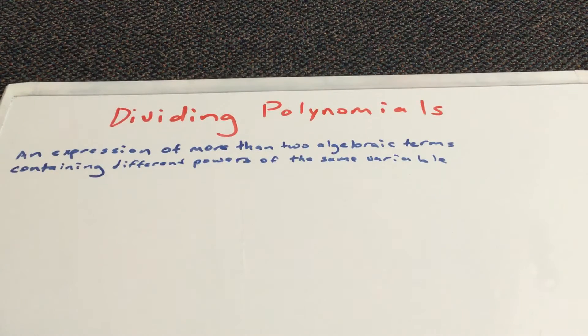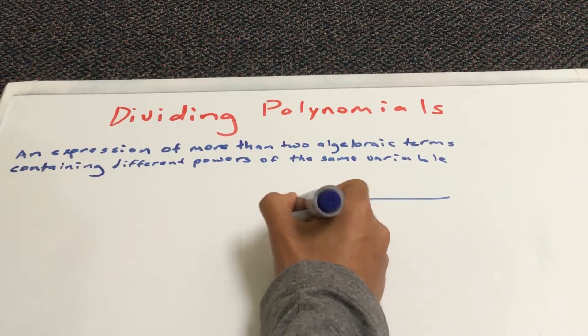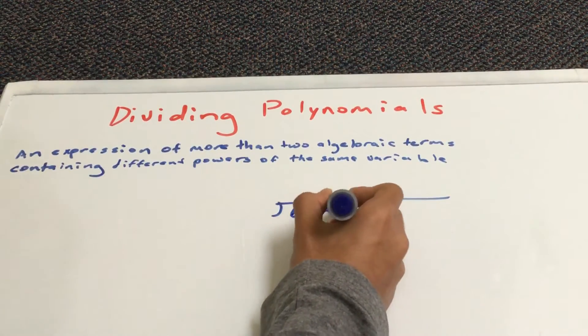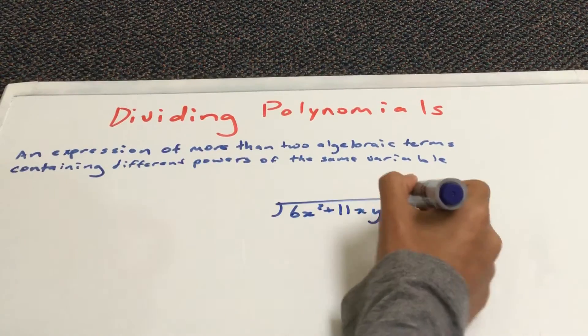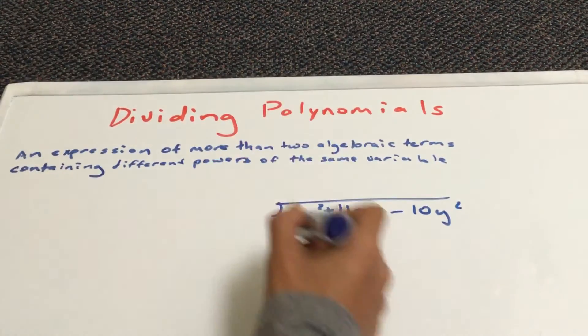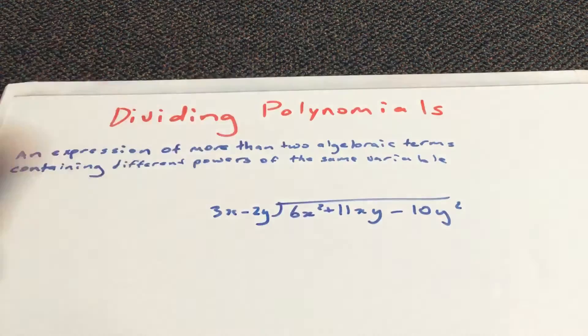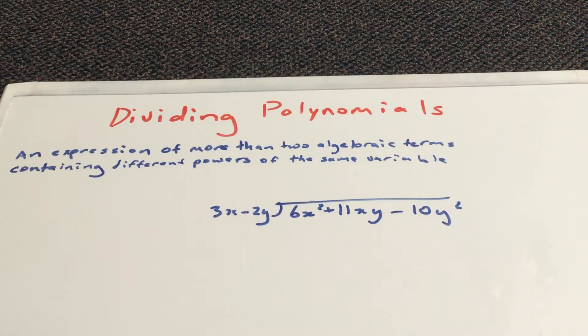Okay. So, let's do another one. Let's do 6x squared plus 11xy minus 10y squared divided by 3x subtracted by 2y. This one's quite hard.